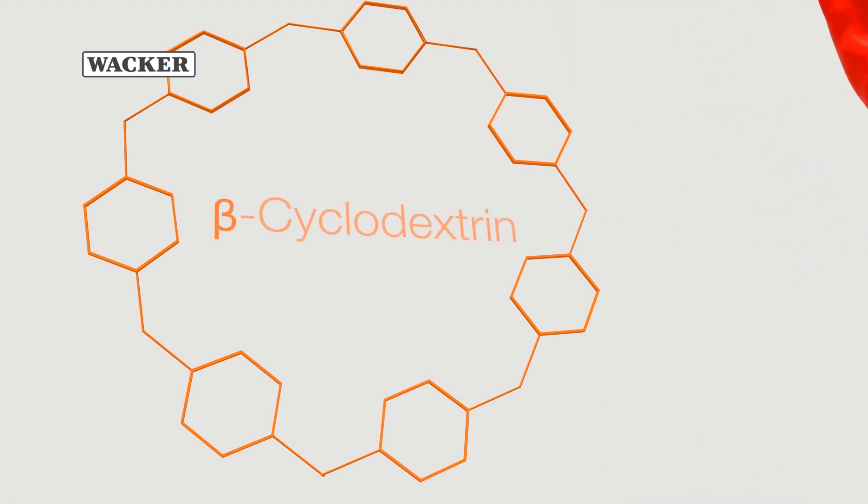This creates a ring made of seven glucose units, beta-cyclodextrin.